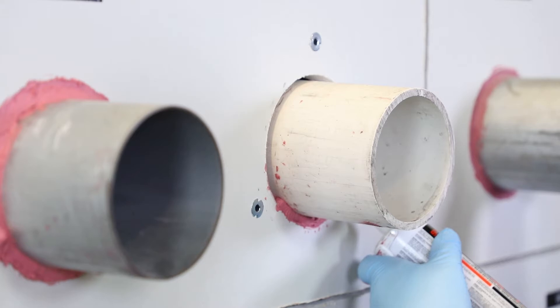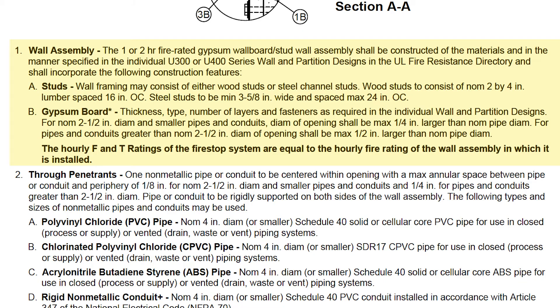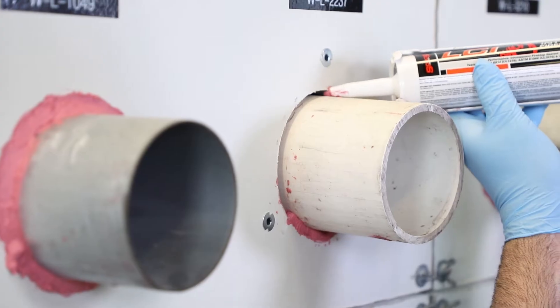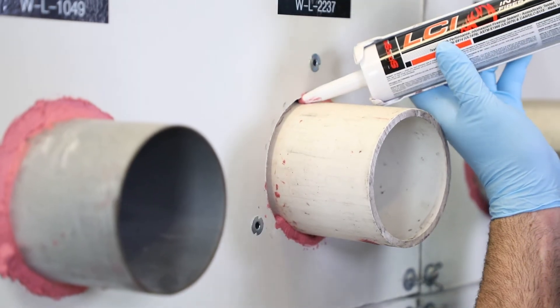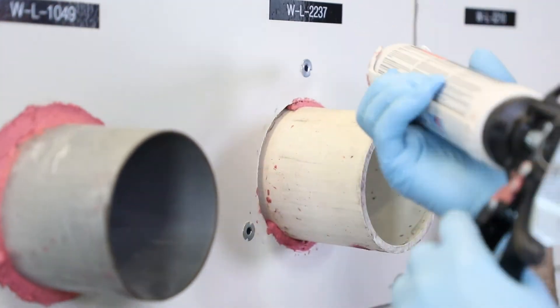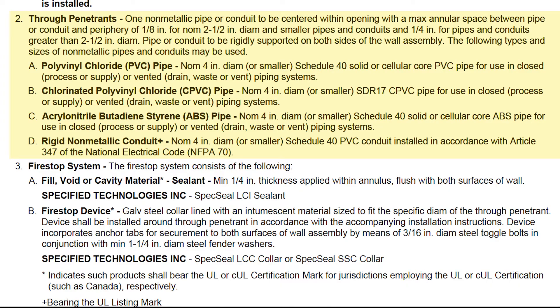Starting from the top, we'll read this through. WL-2237 is good for a one or two hour wall. Our through-penetrants can be anything from four inch PVC to four inch CPVC, four inch ABS.